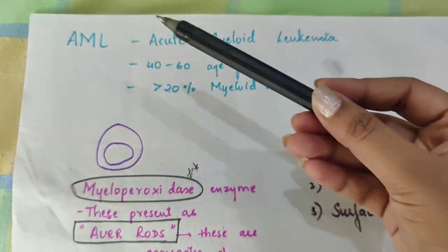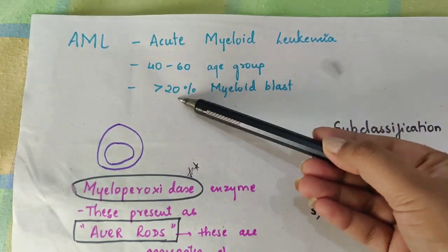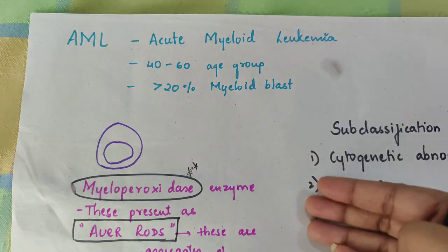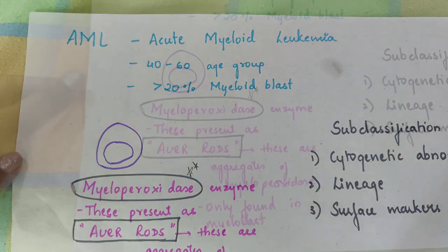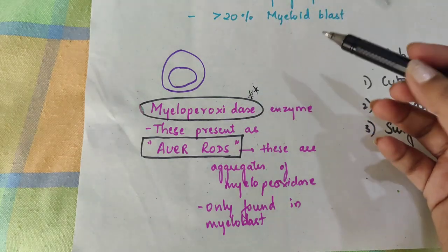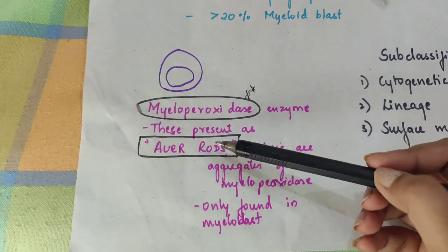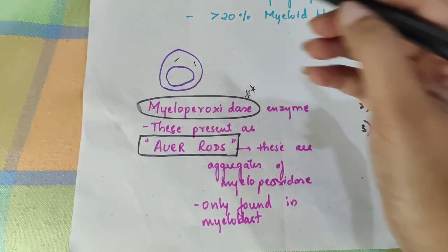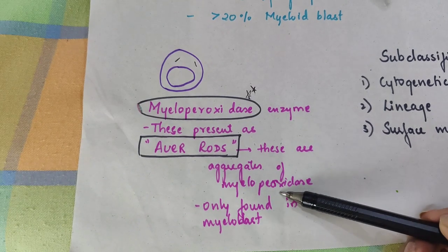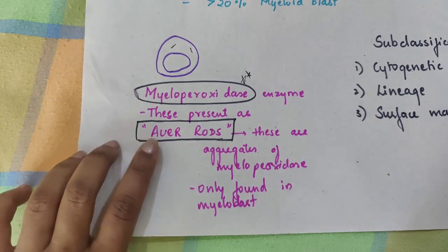AML — Acute Myeloid Leukemia — is seen in the 40 to 60 years age group. It is called acute when there are more than 20% of myeloid blasts. In myeloblasts, there is a key enzyme: myeloperoxidase. There are also rod-like structures in the cytoplasm called Auer rods, which are aggregates of myeloperoxidase and are only found in myeloblasts.